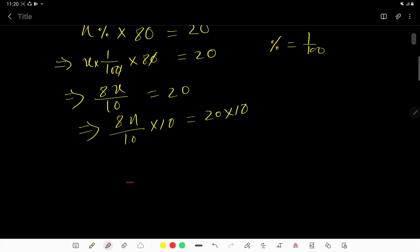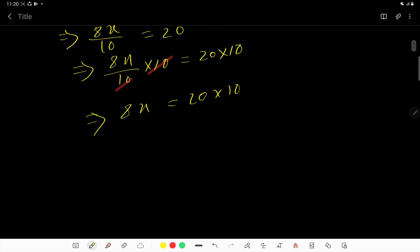Now you can easily cancel this 10, this 10. So you are getting 8X = 20 times 10. Let me divide both sides by 8.